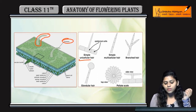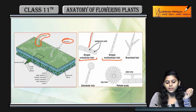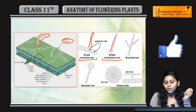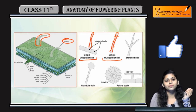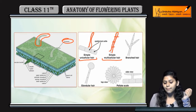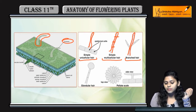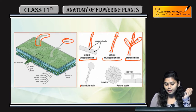Trichome can be unicellular as well as multicellular. You can see unicellular trichome and multicellular trichome. Branched hair can also be present. It can be branched, and glandular hair is also possible.